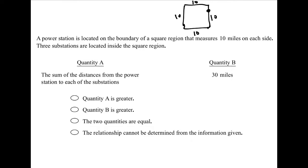The next sentence says three substations are located inside the square region. Well, I don't know where those are. Just like I didn't know where this power station goes, I'm also not sure where the substations go. So I'm going to say there's one there and one there and one here.